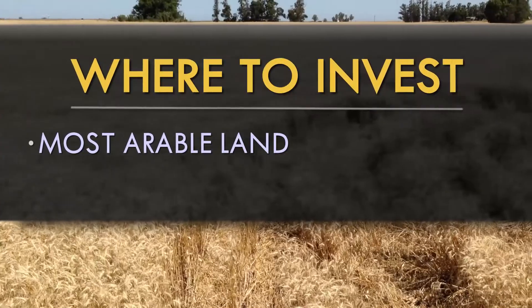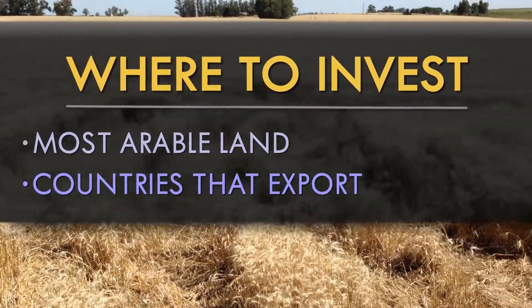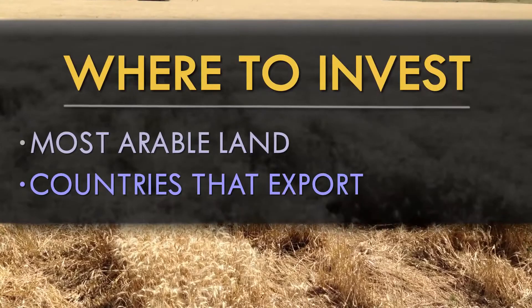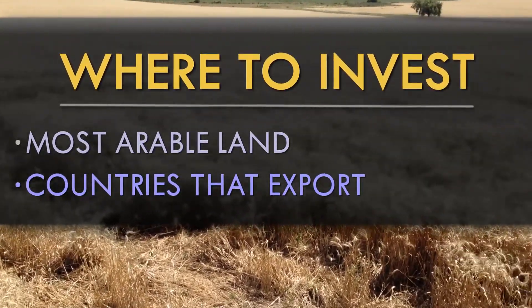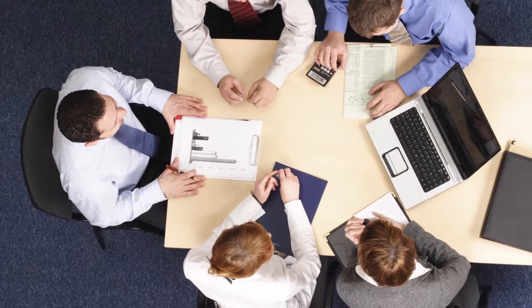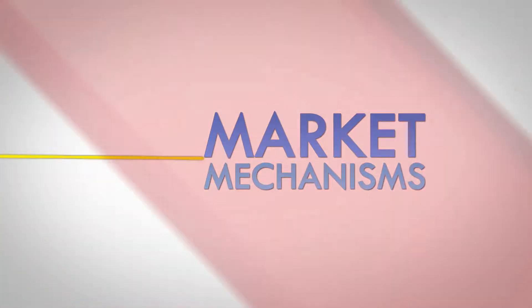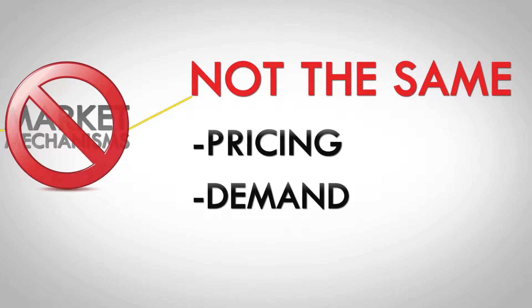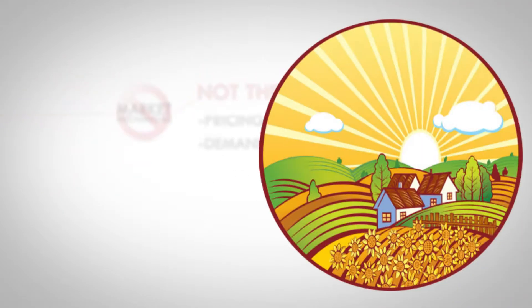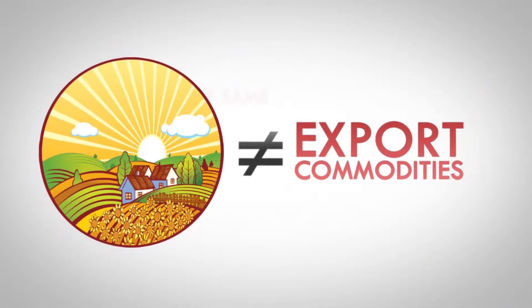With the most arable land and the countries that are actually exporting, that's the subset you're getting down to in terms of where you're going to invest, because you're going to invest somewhere where they're exporting. If you're investing in a place that's not exporting, you don't have the same market mechanisms to get the same pricing, and there's not the same demand for the land because it's not export commodities. So that's an important factor within this kind of arable land map.